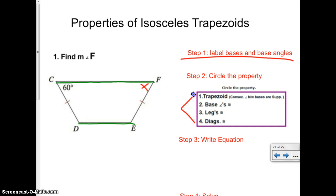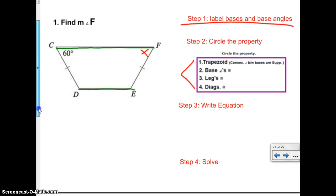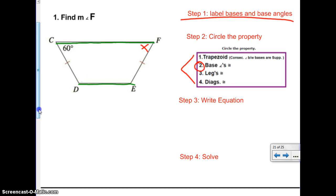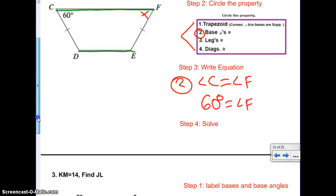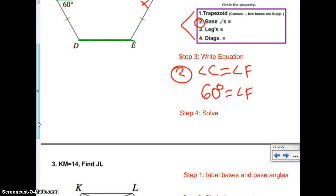Circle the property. Well, if we look at our property, it looks like C and F are both base angles, and it says in an isosceles trapezoid the base angles are equal. That's property number two. So by property number two, we know that angle C is equal to angle F. Well, if angle C is 60, that means angle F is 60. So your final answer for angle F is 60 degrees.